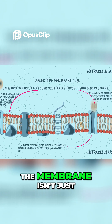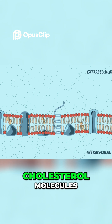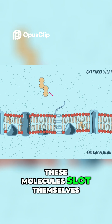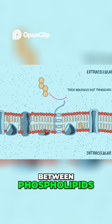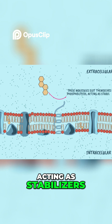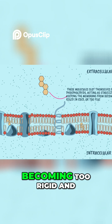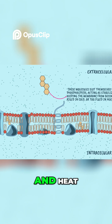The membrane isn't just made of phospholipids — it's also packed with cholesterol molecules. These molecules slot themselves between phospholipids, acting as stabilizers, keeping the membrane from becoming too rigid in cold or too fluid in heat.